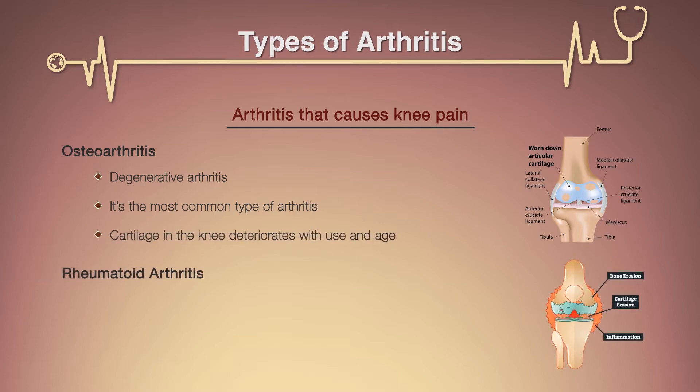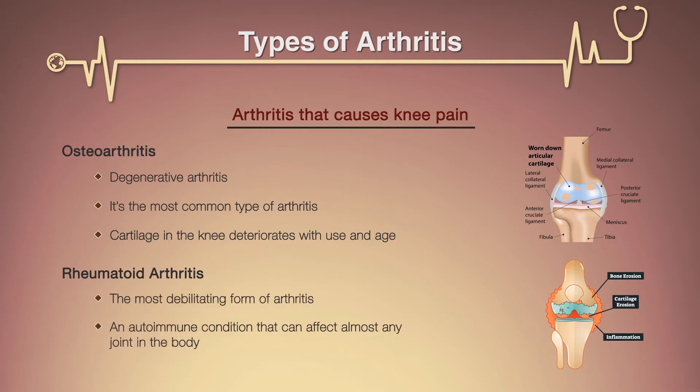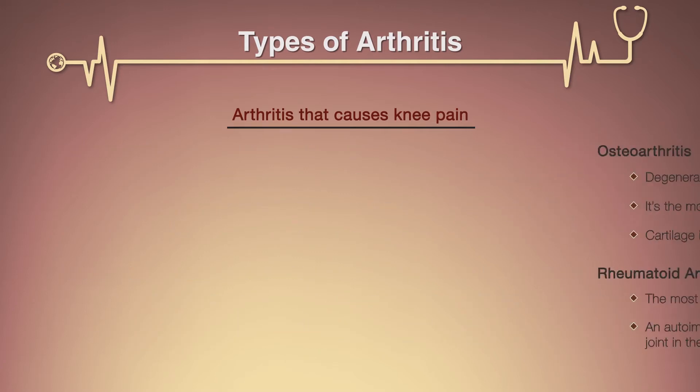Rheumatoid arthritis is the most debilitating form of arthritis. It is an autoimmune condition that can affect almost any joint in your body, including the knees. Although rheumatoid arthritis is a chronic disease, it tends to vary in severity and the symptoms may even come and go.